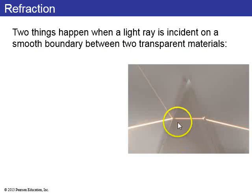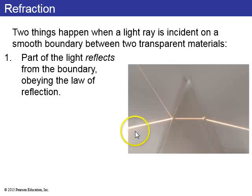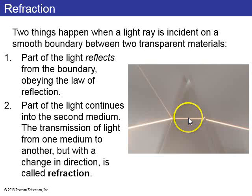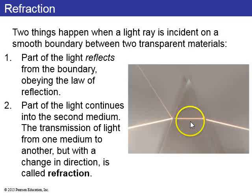When you have two transparent materials with different indices of refraction and you shine a beam of light on that boundary, part of the light reflects from the boundary obeying the law of reflection, and part of the light continues into the second medium. This transmitted light changes its direction, and this is called refraction.